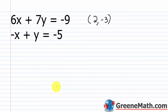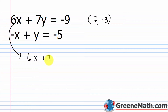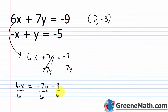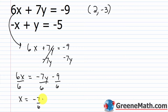Some of you might wonder: if I had solved for x instead, would I get the same answer? Yes! I solved for y because it had a coefficient of 1, but let's try solving the first equation for x. From 6x plus 7y equals negative 9, subtracting 7y and dividing by 6 gives x equals negative seven-sixths y minus three-halves.